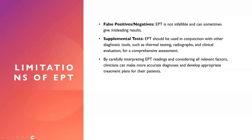Limitations of the EPT include false positive or false negative results — EPT is not infallible and can give misleading results. Supplemental tests are required, such as thermal testing, radiographs, and clinical evaluation for a comprehensive assessment, along with the patient's history and history of the present complaint. By carefully interpreting EPT readings and considering all relevant factors, clinicians can make more accurate diagnoses and develop appropriate treatment plans.